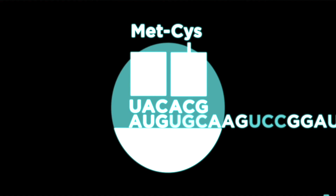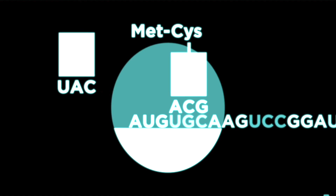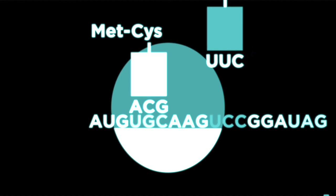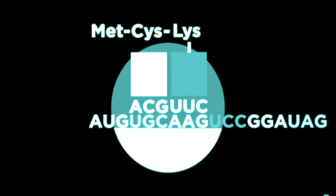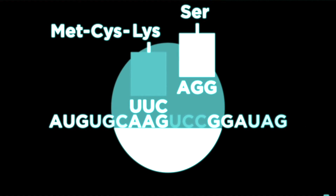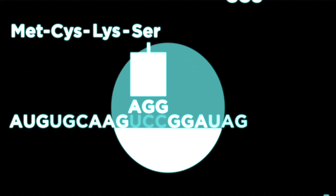During elongation, the next charged tRNA with the corresponding anticodons enters with another amino acid. The amino acid will then form a peptide bond and the whole mRNA will slide down one codon. This process will continue to repeat till the end codon is reached.